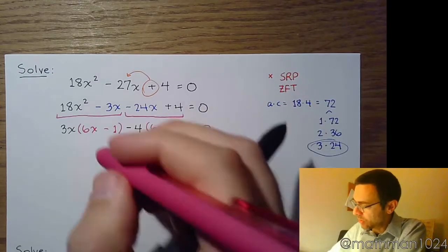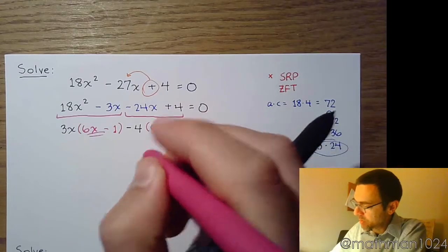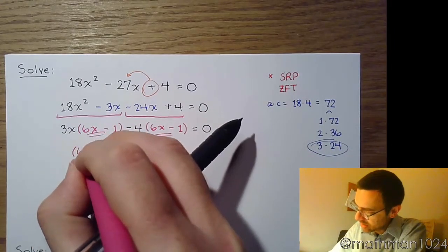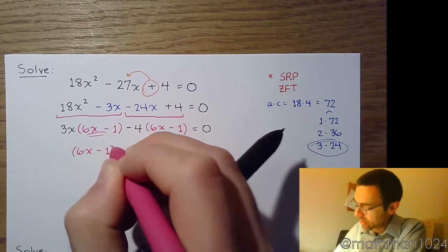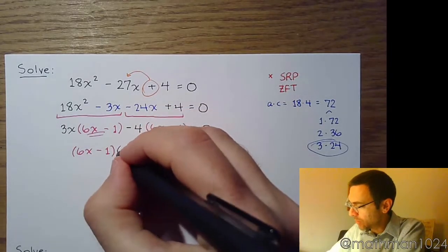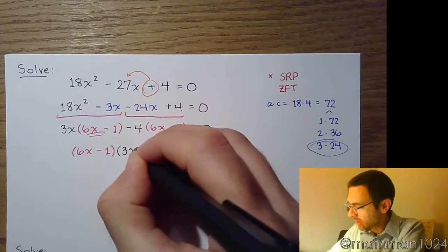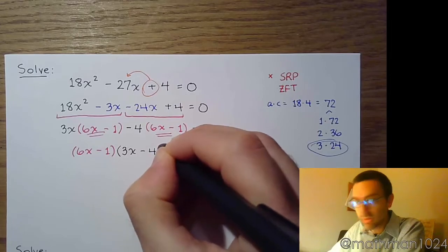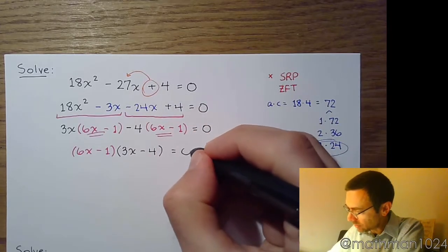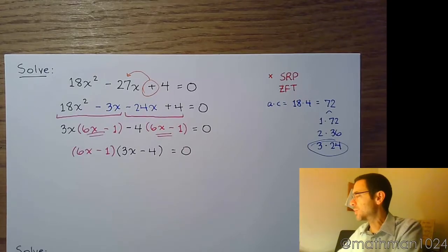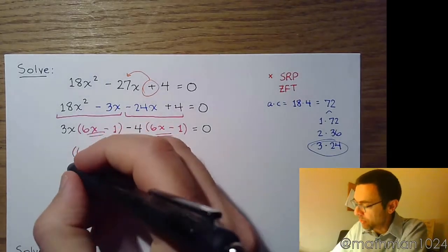So 6x minus 1 is my greatest common factor. I factor that out, I'm left with 3x minus 4. So I've got my factorization and it equals 0, so I should be good to go from here.